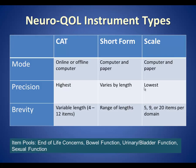NeuroQual includes three different types of instruments: computer adaptive tests or CATs, short forms, and scales. These instrument types vary in terms of mode of administration, precision, and length. Most, but not all, of the fully developed instruments in NeuroQual are available as CATs and short forms.